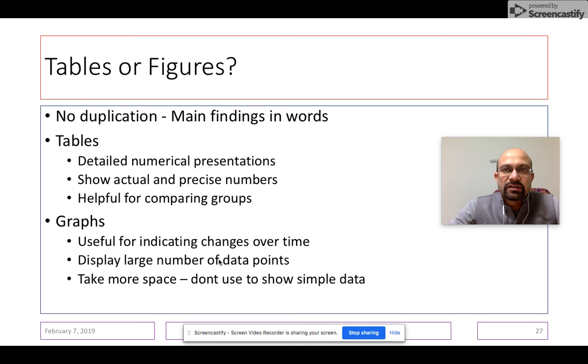Graphs generally take a lot of space. And when you are sending an article to a printed journal, they are very conscious of the space that is going to be taken up, how much ink is going to be taken up. So generally, graphs are not used to show some simple data. They are rather used for having complicated data with a large number of data points. So please remember, tables are helpful for comparing groups and graphs are good for indicating changes over time.